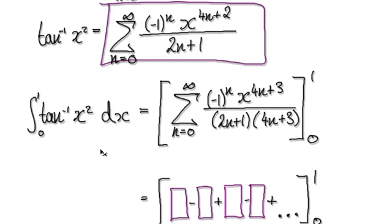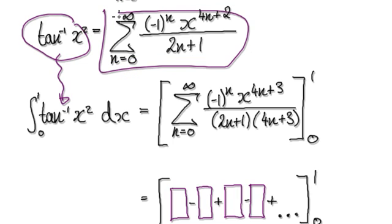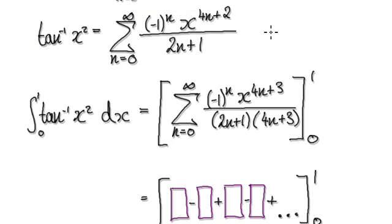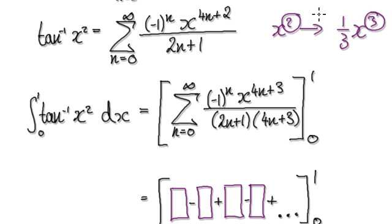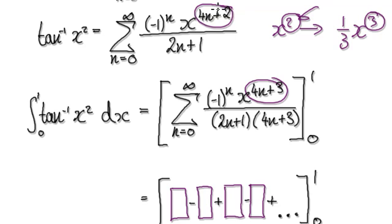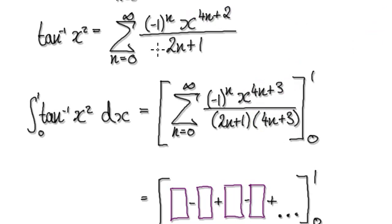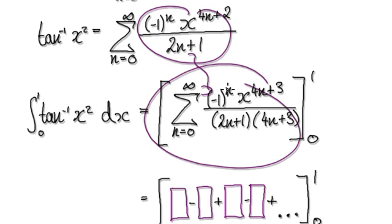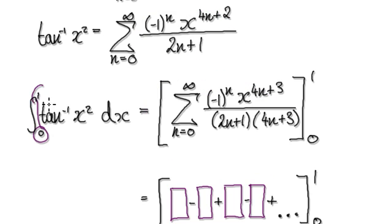Now we need to integrate it. We don't know how to integrate this directly, so we're going to integrate the series. Remember, if you integrate x squared it becomes one-third x cubed — so the power is always one notch higher. When you integrate this, it gives you this because the power goes one notch higher. Then you've got to divide by the same denominator — 4n plus 3. Integrating this will then give us this.